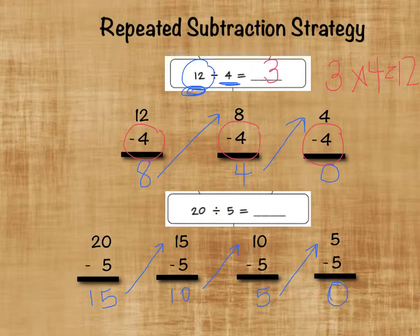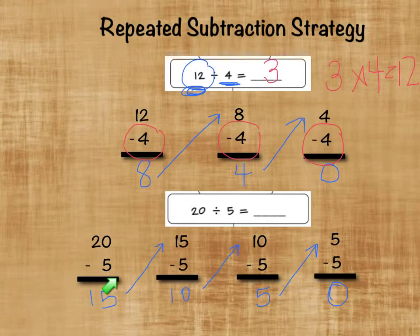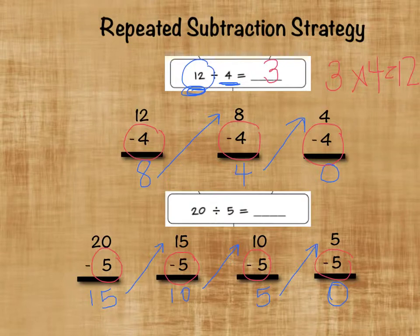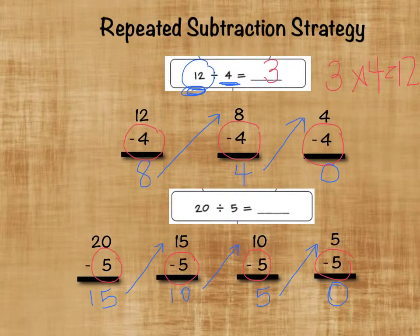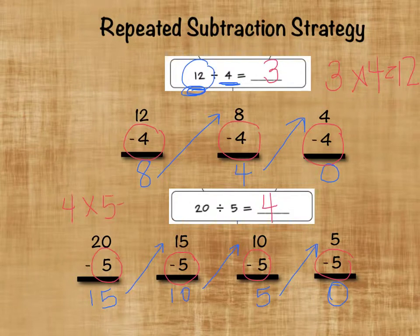So now let's count for this problem. 20 divided by 5 equals — I want to know how many times I subtracted 5. So let's look: 1, 2, 3, 4. I subtracted 5 four times, so my answer is 4. 20 divided by 5 equals 4. Or 4 times 5 equals 20 — that's how I check my work.